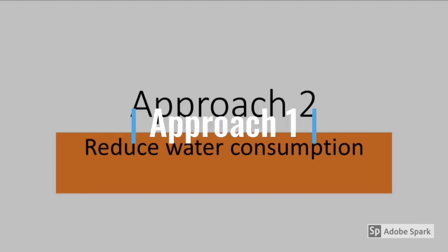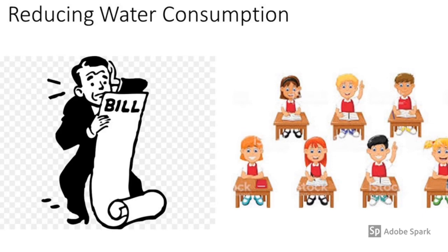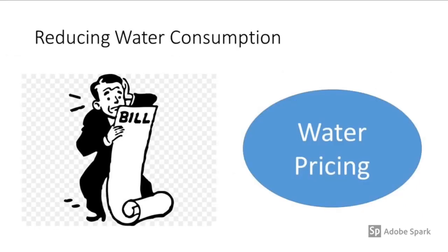Approach one — there's an error on the screen, this is approach one, not approach two — is to reduce water consumption. There are two methods employed. The first is water pricing. Singapore's water pricing system penalizes excessive use through a two-tier system where quantity and pricing are linked: the more you use beyond a certain quantity, the higher the water tax rate.